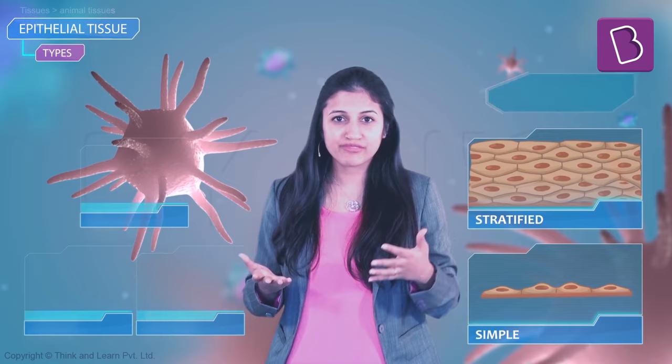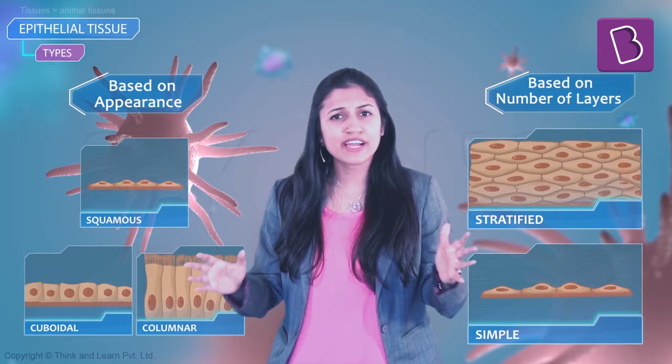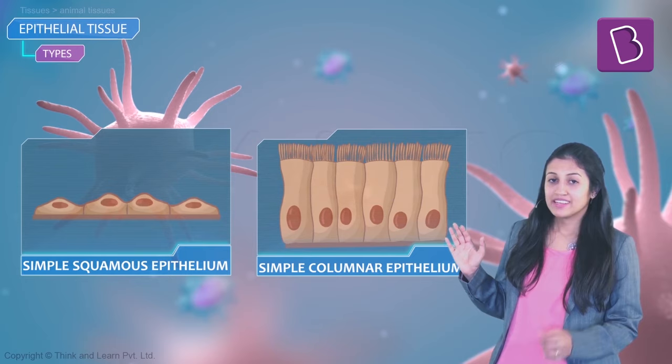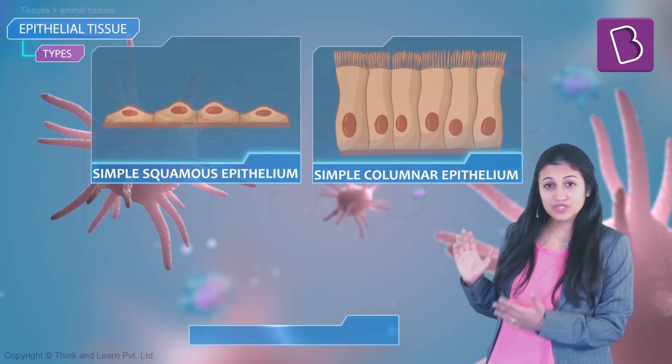Let's do some permutations and combinations, and then you will have met every kind of epithelial cell. Simple squamous has one layer of squamous epithelial cells. Simple columnar has a single layer of columnar cells.